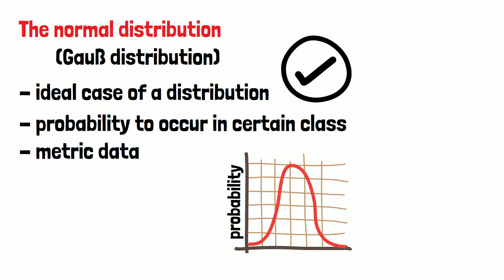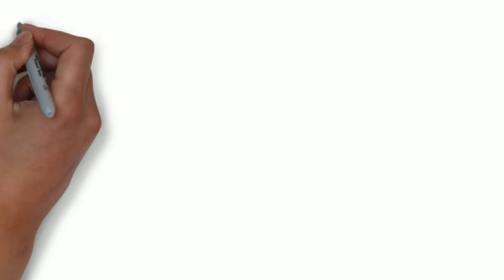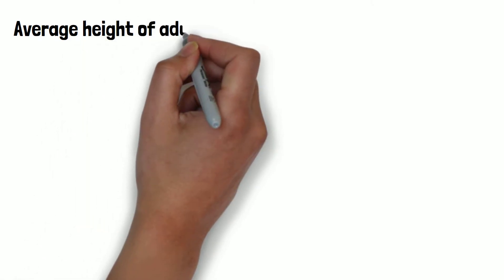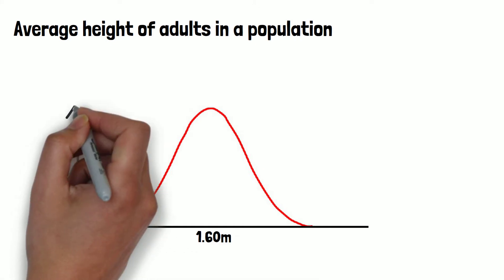Let's look at some examples. If you want to assess what is the average height of adults in a population, they will range between a minimum and a maximum value. Most of the people will have a height of, let's say, around 1 meter 60.